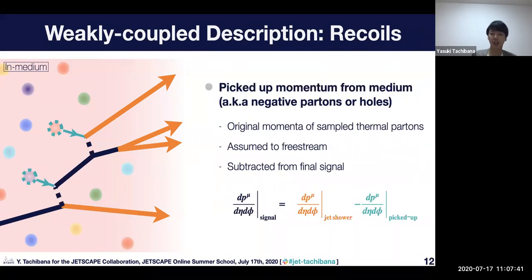One thing we need to take care of is the pickup momentum from the medium. If you are very careful, you can realize that we have extra energy and momentum picked up from the medium, because we added the scattered parton. We have extra energy which is equivalent to the original momentum of the sampled thermal parton. Usually in simulation with recoil, we assume those energy and momentum remain free streaming in the medium. In the end, we subtract their energy and momentum from the final signal of the jet.